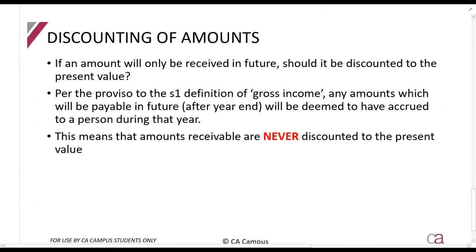Regarding the discounting of amounts: what happens if you should receive an amount in the future? In Year 1 you make a sale, and in Year 5 they will pay you 10,000 rands. Should you discount it to Year 1 because of the time value of money? The answer is no — you include the 10,000 rands. We don't do discounting of amounts in tax.